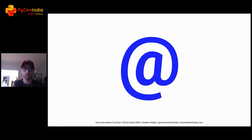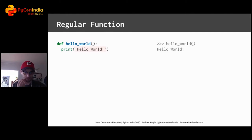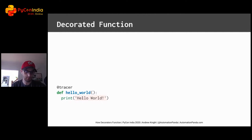The best way to learn is by seeing actual code. Here is a regular old hello world function. When we run it, it prints hello world. Nothing fancy here. Now, let's take that same function and bam, let's add a decorator. Using this at-sign, we just added a decorator named Tracer to this hello world function.